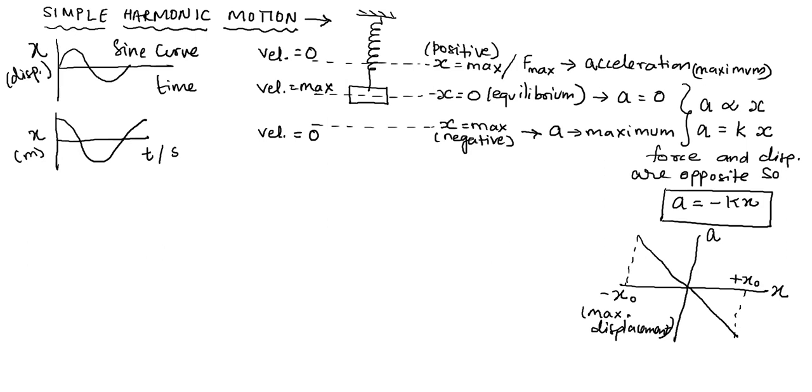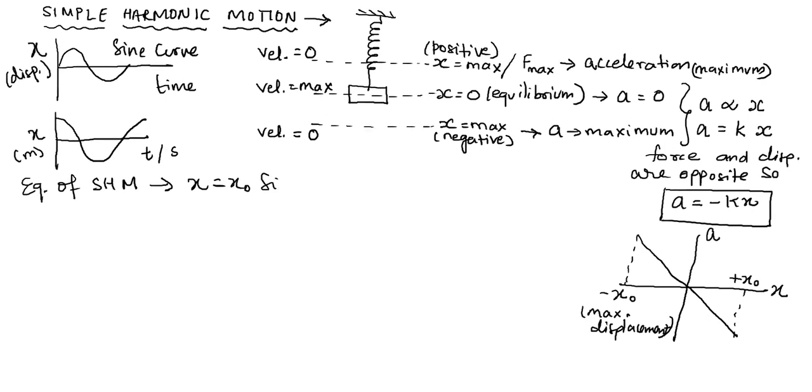Now let us also analyze something more here. The equation of simple harmonic motion is written as x equal to x naught sine omega t, or let us say x equal to x naught cos omega t. Now from where do we get this omega?